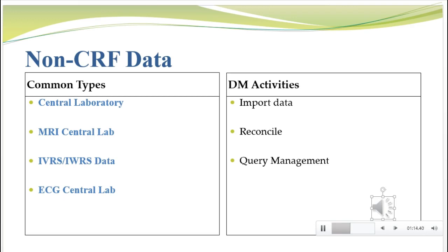Common types of central laboratory data include hematology, urinalysis, and blood chemistry panels. Some common central labs are LabCorp and Covance — these groups have clinical trials protocols and contract with CROs and drug companies running clinical trials. You send all your lab samples to them, and they send a data set back to you so you can reconcile it to your clinical database.